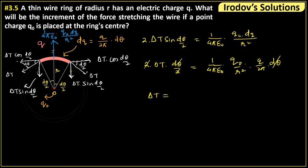Finally, solving for δt gives the answer: δt = q₀Q / (8π²ε₀r²). Thank you.